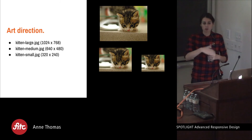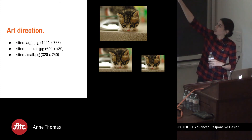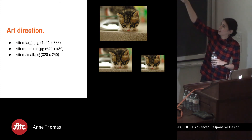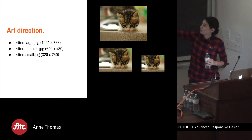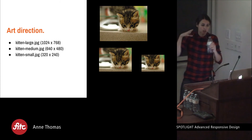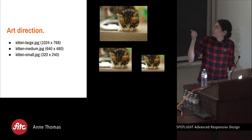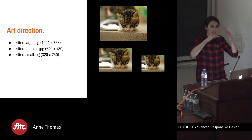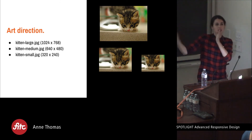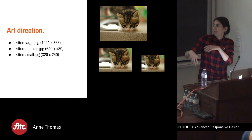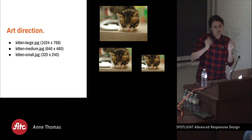One cool thing about responsive images is that it also allows for art direction. You can see in the first image, kitten-large shows more of the scenery; kitten-medium is more cropped in; and kitten-small is really zoomed in. Because these are completely different files, you can do whatever you want with the images served at different sizes. If you had a picture of a tiger on desktop, you can make it a picture of a tiny kitten on mobile. Totally possible.